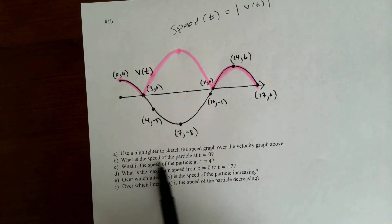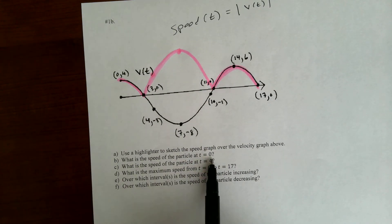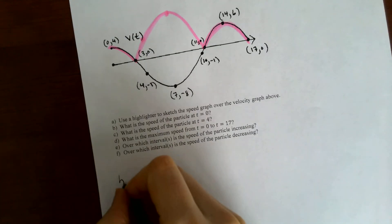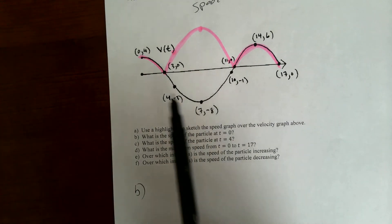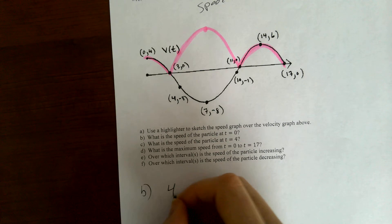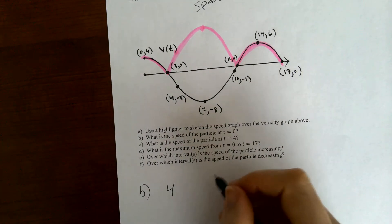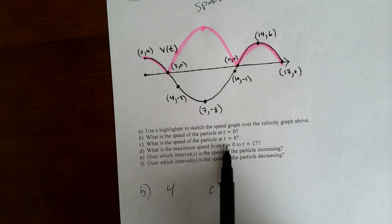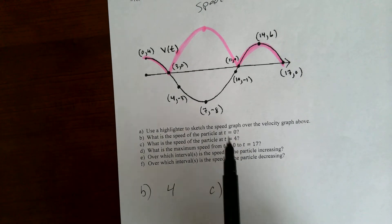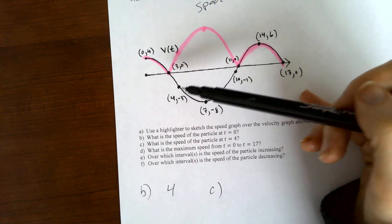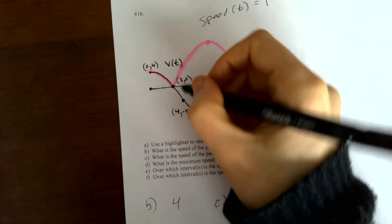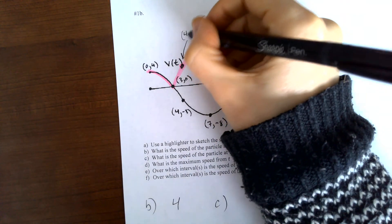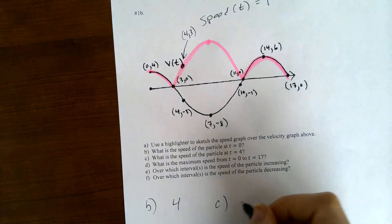Now, what is the speed of the particle at t equals 0? So I'm using the pink graph now. For part b, the speed at t equals 0 is 4. For part c, what is the speed of the particle at t equals 4? So at t equals 4, for the speed graph, it's this point here. That point is (4, positive 3), so the answer is 3.